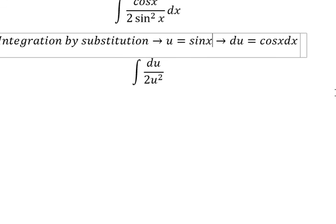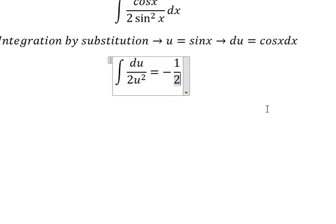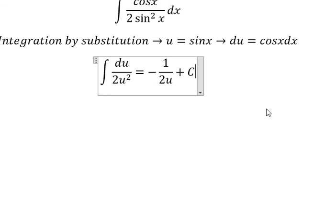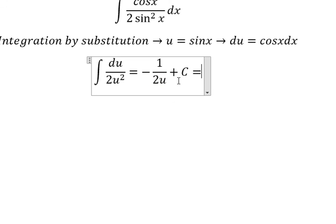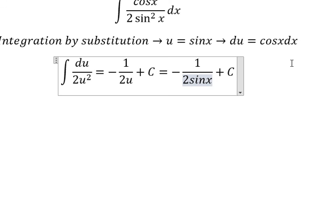The integral of du over u squared, you will get negative 1 over 2u, and we have the constant. Next, u we need to change back for sine x.